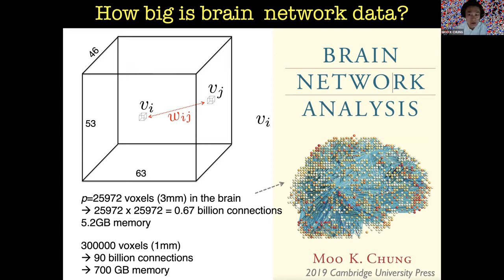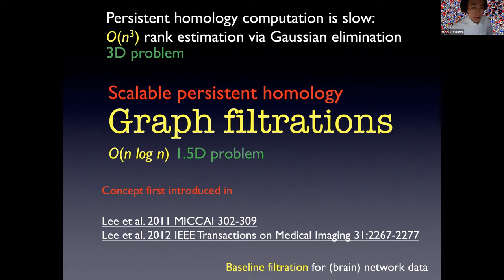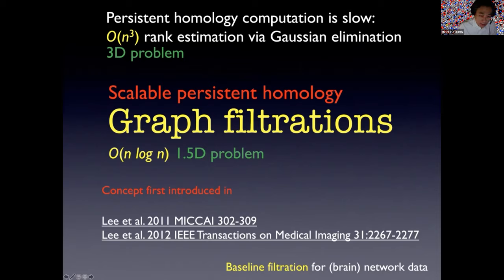I cannot use deep computation. What persistent homology usually does is an N-cube algorithm. I avoid anything with an N-cube algorithm. Three-dimensional image processing is N-cube computation. Gaussian elimination is N-cube, matrix inversion is N-cube, singular value decomposition is N-cube, PCA is N-cube. All those are unscalable. So we are going to use scalable homology — persistent homology — what we call graph filtration, in N log N time in almost all operations.